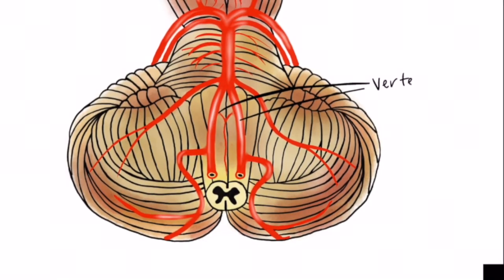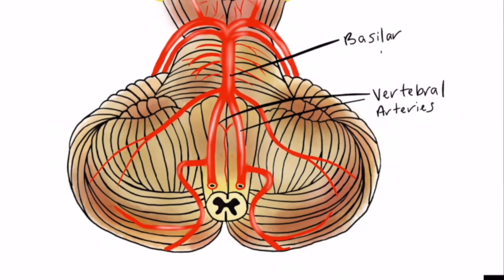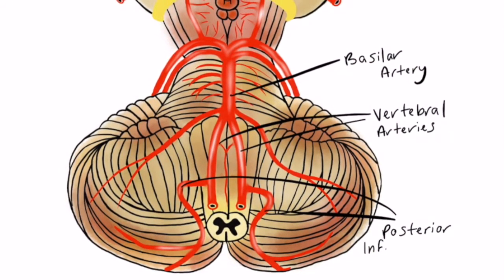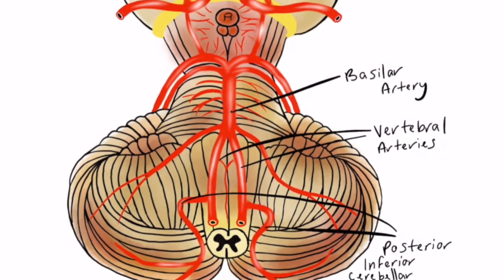Let's start with the blood supplied to the brainstem. Blood is derived from the posterior circulation formed by the vertebral arteries which join to form the basilar artery. From the two vertebral arteries come the posterior inferior cerebellar arteries or PICA for short.